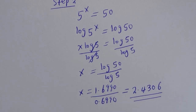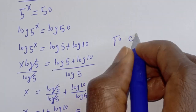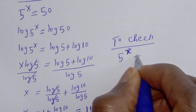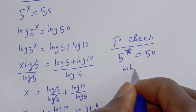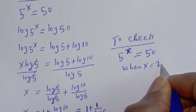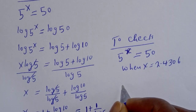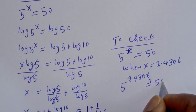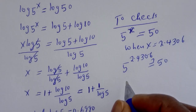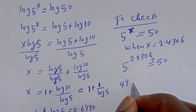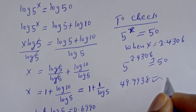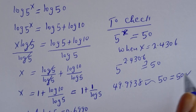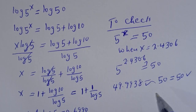Let's verify our answer. We have 5 raised to the power s equals 50. When s equals 2.4306, we compute 5 raised to the power 2.4306, which equals approximately 49.9938, which is approximately equal to 50. This satisfies the given equation, confirming that s equals 2.4306 is correct.